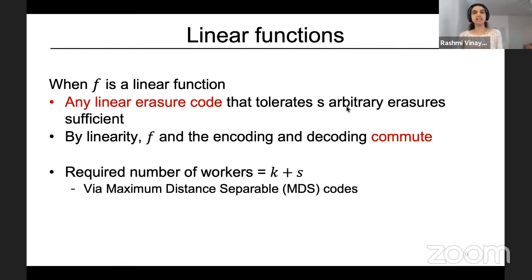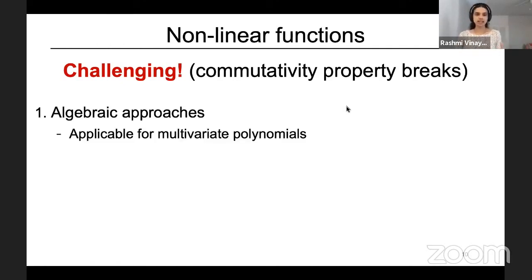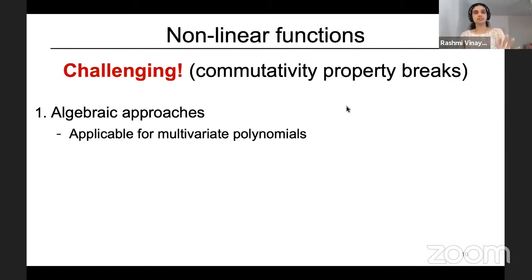One of the key metrics is the minimum number of workers needed to perform the computation in a resilient fashion. When f is linear, any linear erasure code that tolerates s arbitrary erasures is sufficient. This is because by linearity, function f and the encoding and decoding operations commute. The number of required workers when f is linear to tolerate s stragglers is just k plus s, achievable via any maximum distance separable code.